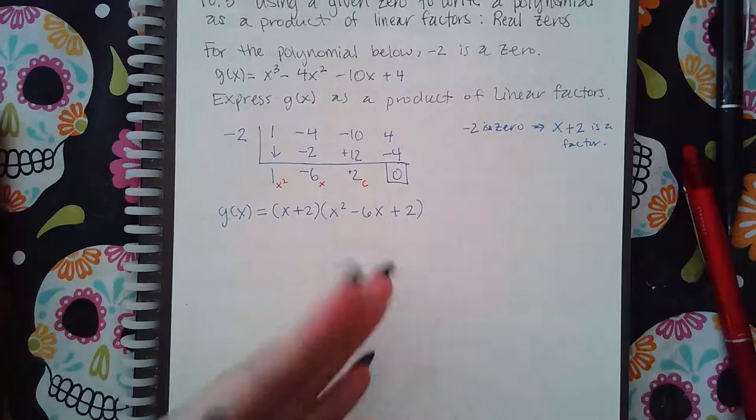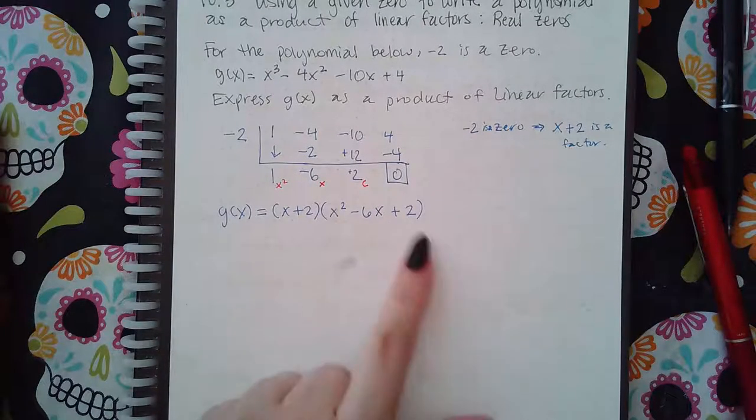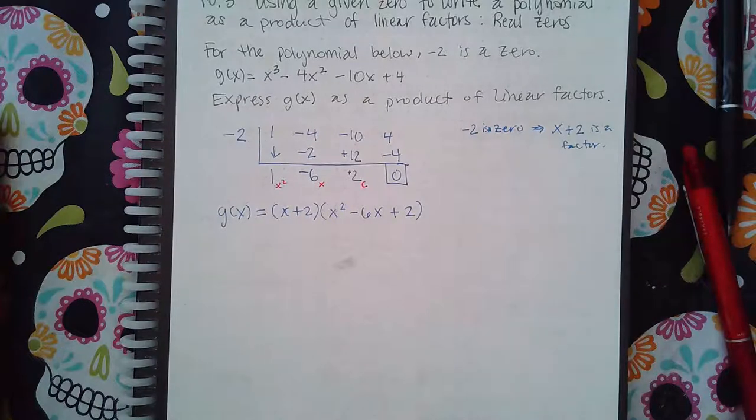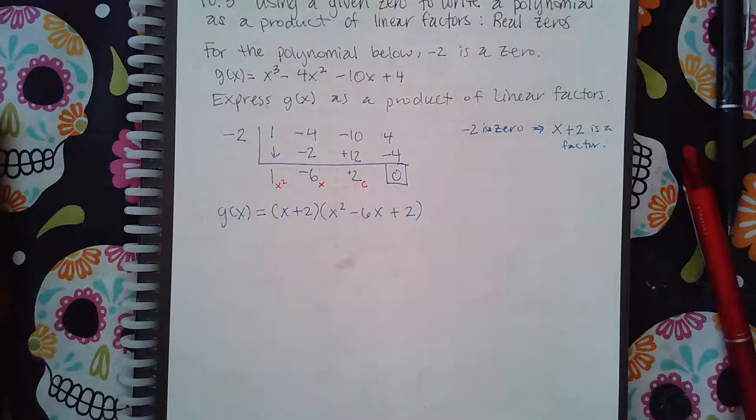Now if I could factor it just by looking at it, great, but there's no factors of two that are going to add to give me negative six. So what that means is that I'm going to have to figure out what those factors are using the quadratic formula.